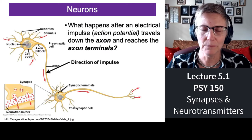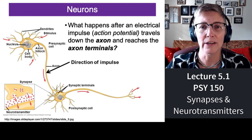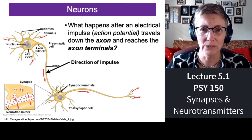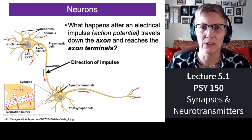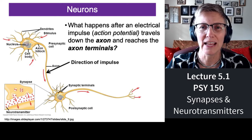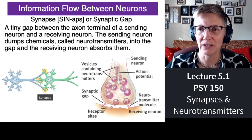Just as a reminder, neurons send action potentials down their axon. At the end of the axon is the axon terminal. When an action potential arrives at an axon terminal, it triggers the release of a chemical or a class of chemicals called neurotransmitters into the synapse. The synapse is the gap or the space between neurons.